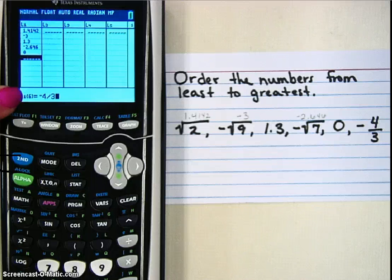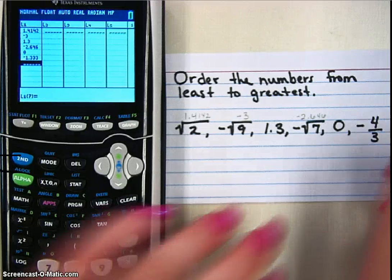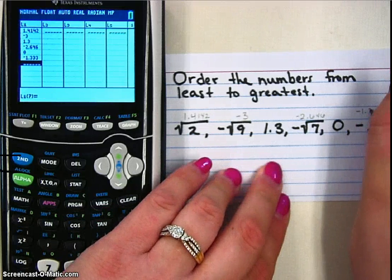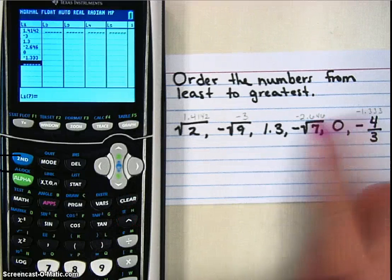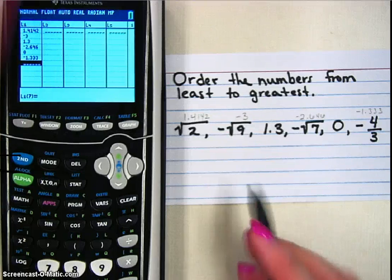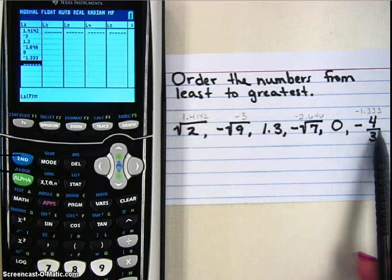And now to do that, just do negative 4 divided by 3. Sometimes it leaves it as a fraction in your calculator, and sometimes it gives it to you as a decimal. If it gives it to you as a decimal, go ahead and write it down.